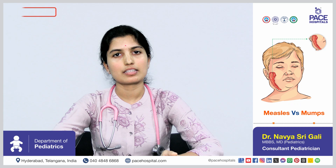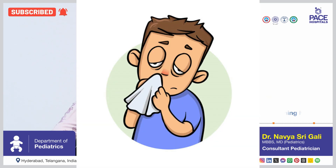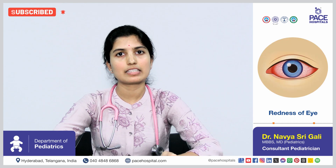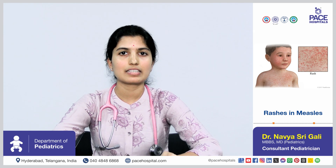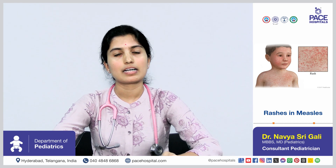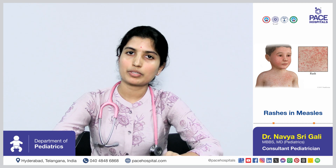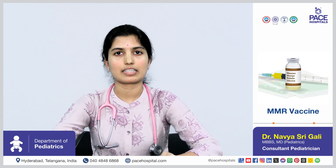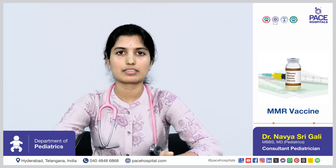Both mumps and measles are viral infections. The symptoms seen in measles are running nose, cough, redness of eyes, watery eyes, and low-grade fever. The rashes in measles start posterior to the ears, then spread to the face and throughout the body. There is no specific treatment for measles; supportive care can be given. Measles is also protected under MMR vaccination, which protects the child from both mumps and measles.